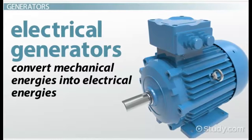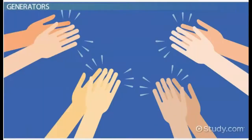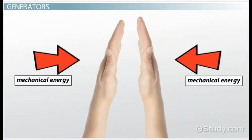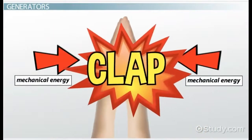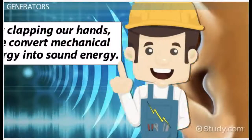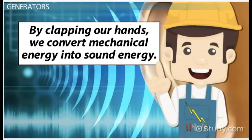For example, an easy way for us to convert energy is by clapping our hands together. When we clap our hands, we move them toward each other. That motion is mechanical energy. When our hands come together, they make a clapping noise. That noise is sound energy. So by clapping our hands, we convert mechanical energy into sound energy, and that is a simple form of energy conversion.